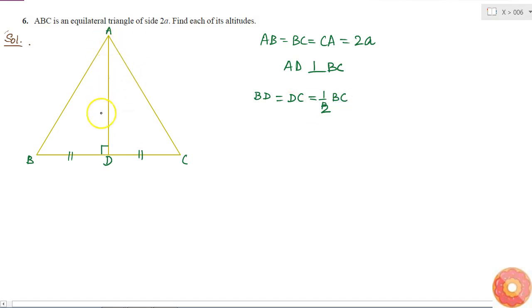Because the altitude of an equilateral triangle is also the median, I can write it like this. That is equal to half of 2A, which is A. So now I got the length of BD is equal to A.